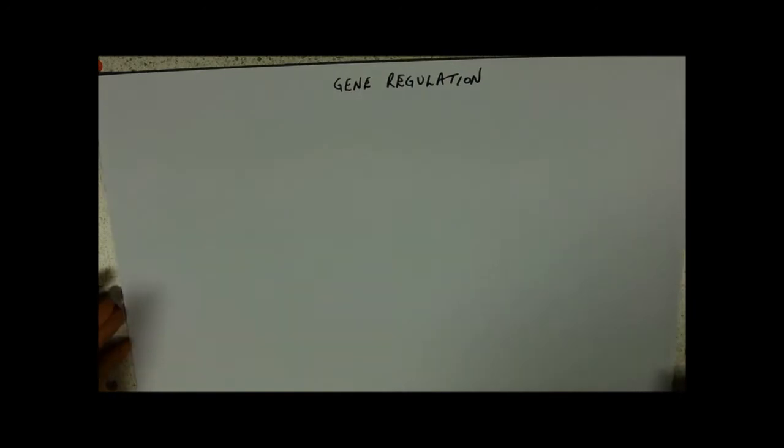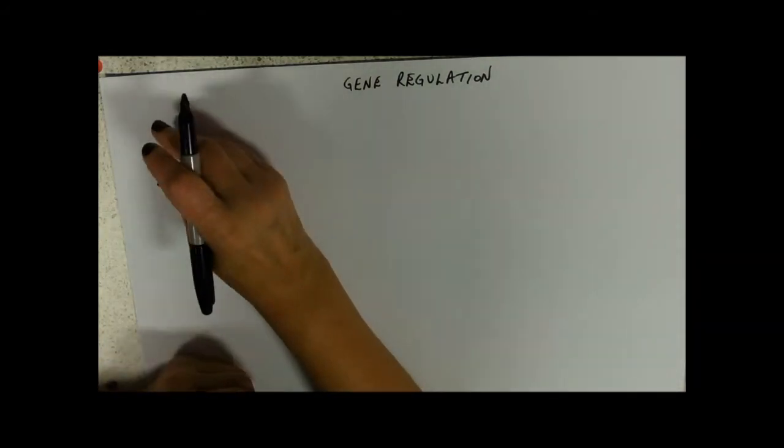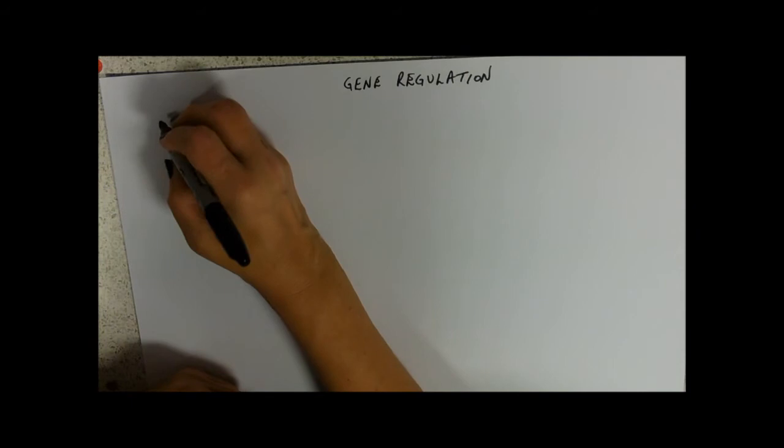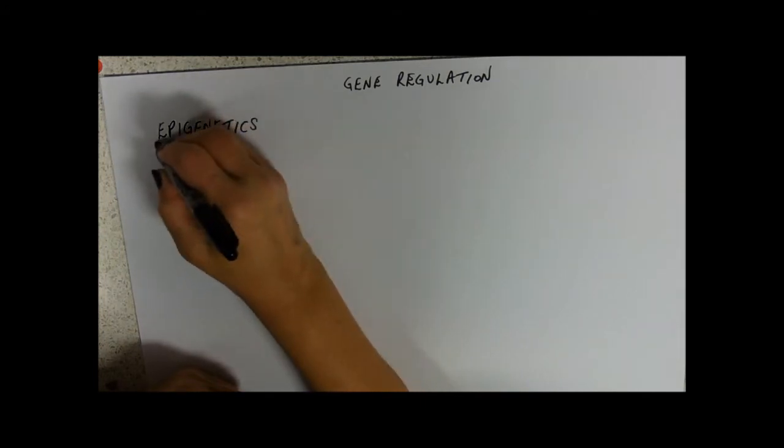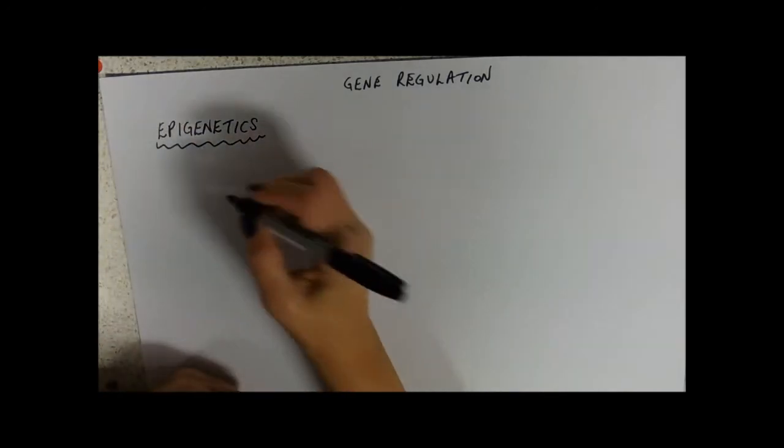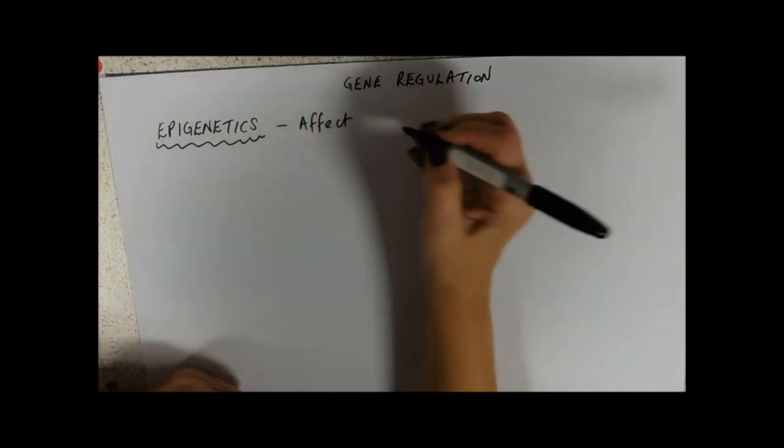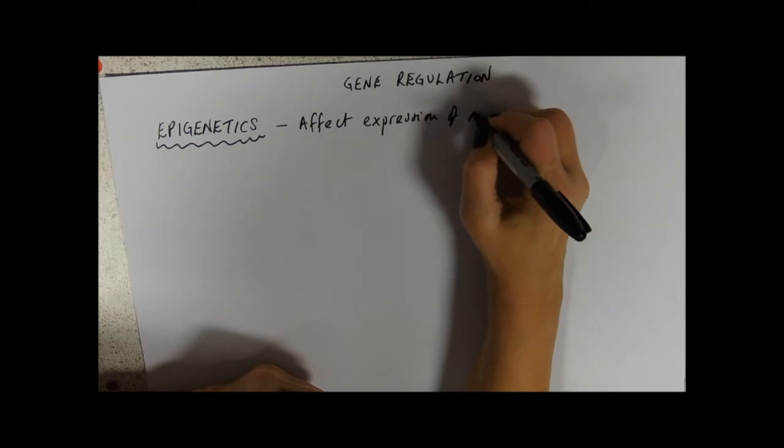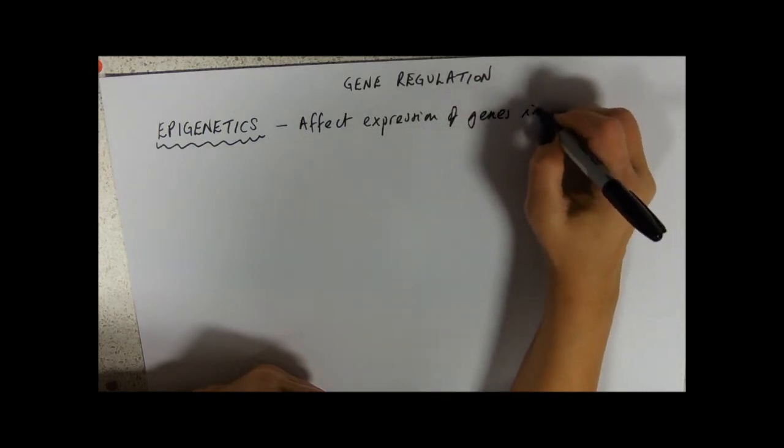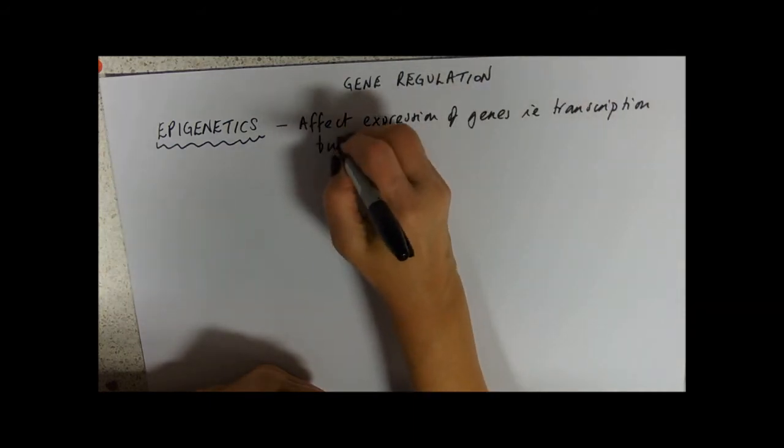And there are other ways in which the genes are, their expression if you like, is regulated. And our examples, so that one was a bit of an unfamiliar one, but our examples come under the umbrella title of epigenetics. And what we're looking at in epigenetics are things that affect the expression of genes, i.e. transcription, but not the code.